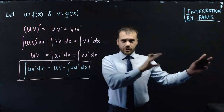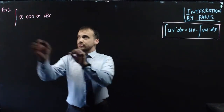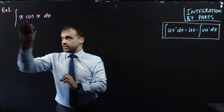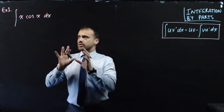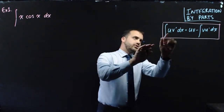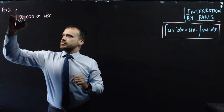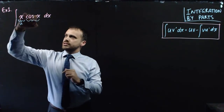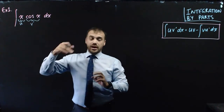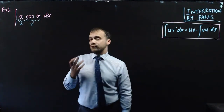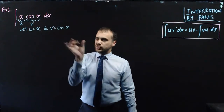I'm going to move this formula over here and we're going to do some questions. Here's the first one: it's an integral of a product of functions — x times cos x with respect to x. Looking at our formula, the integral of uv', I'm going to let x be u and cos x be v'. A little different to the product rule in the sense that one function is u and one is the derivative of v. So I'm going to let u equal x and v' equal cos x.